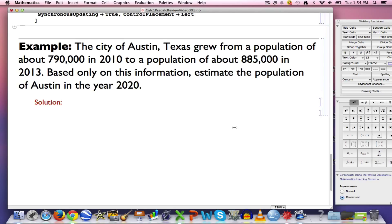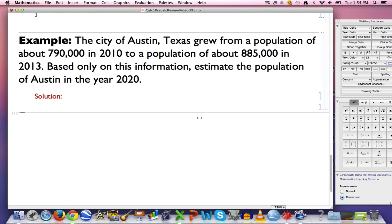And here's our example. So now we're going to go back to some math here. The city of Austin, Texas, and I looked this up on Wikipedia, so you know for sure it's correct, grew from a population of about 790,000 in 2010 to a population of about 885,000 in 2013. That's quite a bit of growth, actually. Based only on this information, we want to try to estimate the population of Austin in the year 2020.